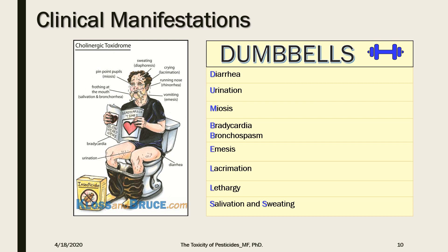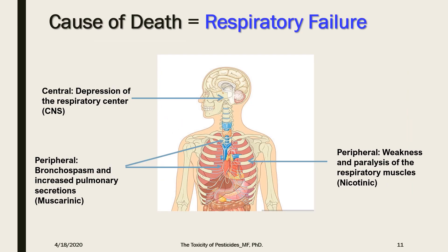To help remember these symptoms, the mnemonic DUMBBELLS is presented on this slide. In cases of organophosphate toxicity, respiratory failure is the number one concern. Failure of respiration may be caused by a central mechanism — depression of the respiratory center — or peripheral effects: nicotinic, through failure of respiratory muscles, or muscarinic, through bronchospasm and increased bronchial secretions. The patient effectively drowns in their own secretions.